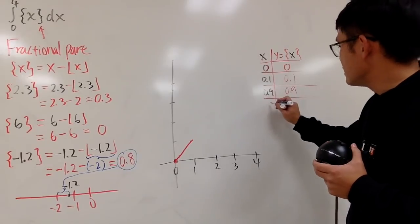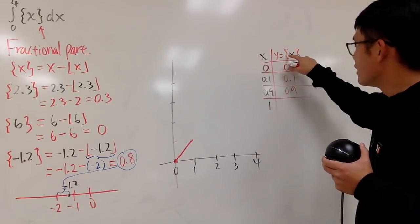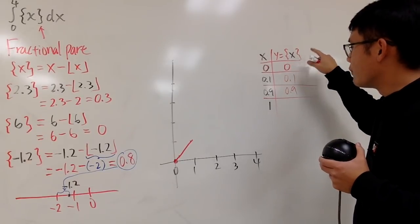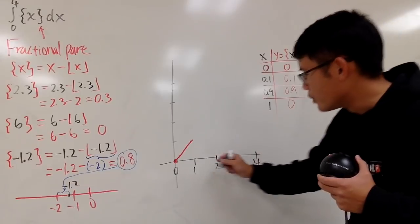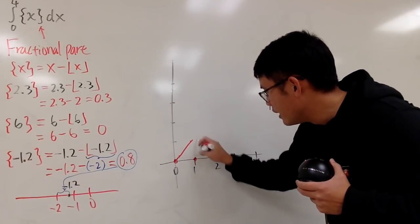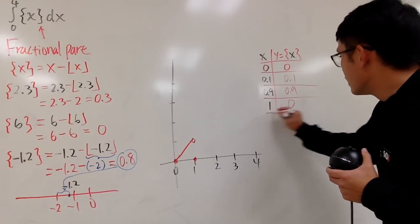However, when x is equal to 1, well, the fractional part of 1 is 0. Well, now, when x is 1 is 0, you are going down right here. You have to make an open circle. And, you continue. Next, if you put one point, let's say 2,